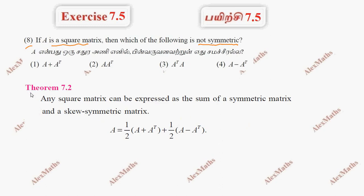We already know the theorem — in the use of any problem, one matrix can be expressed as the sum of a symmetric and a skew symmetric matrix. That is, a sum of two things: symmetric and skew symmetric.